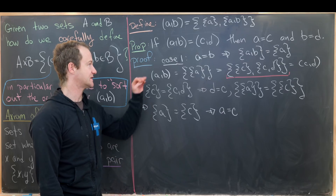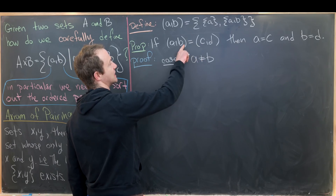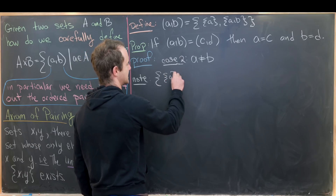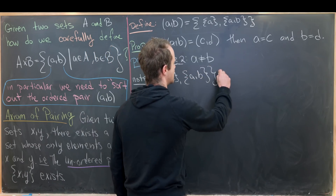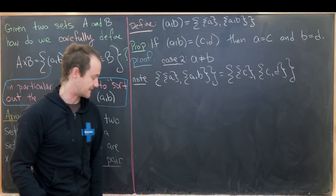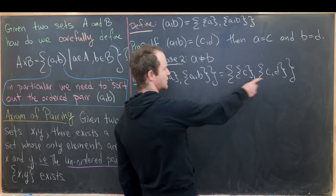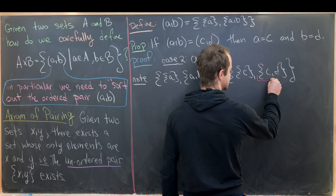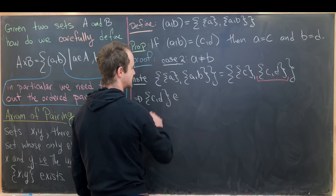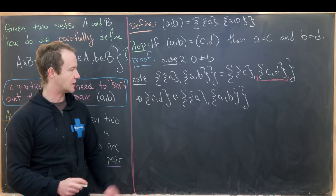Now let's move to our second and final case: when a is not equal to b. We start by rewriting the equation (a, b) equals (c, d) using our definition of the ordered pair: the set containing {a} and {a, b} must equal the set containing {c} and {c, d}. These two sets are equal, and the right-hand side contains the element {c, d}. By equality of sets, {c, d} must be an element of the set containing {a} and {a, b}, so it must be exactly one of those two elements.